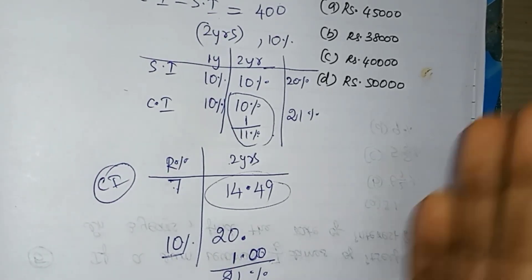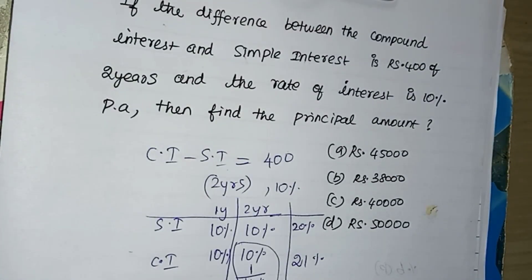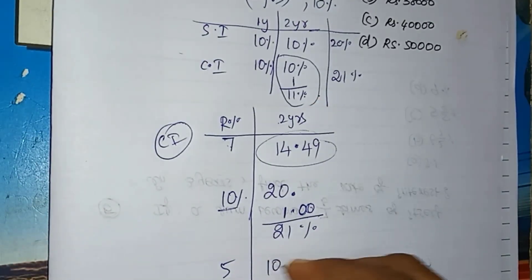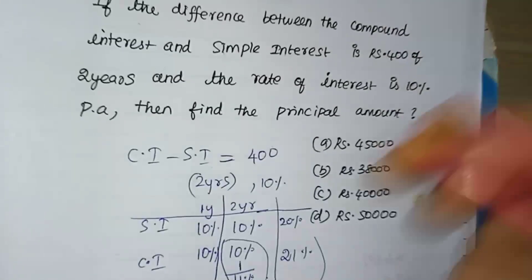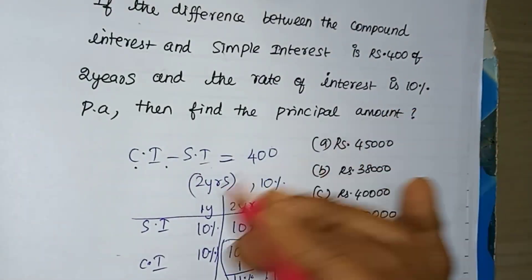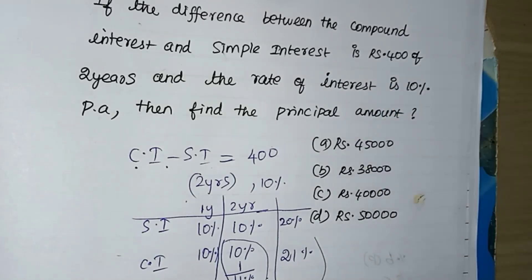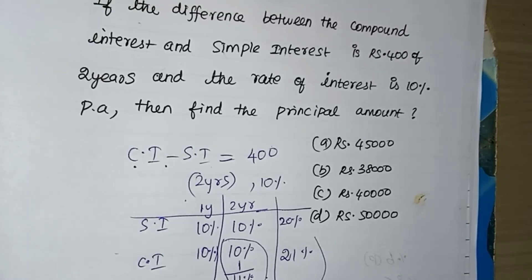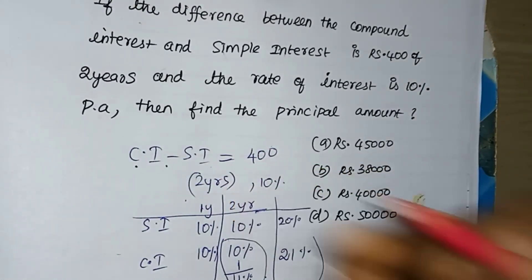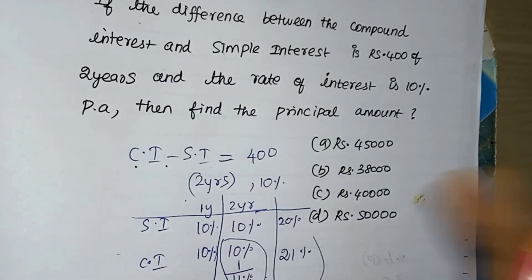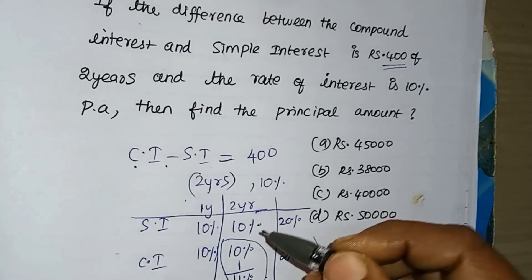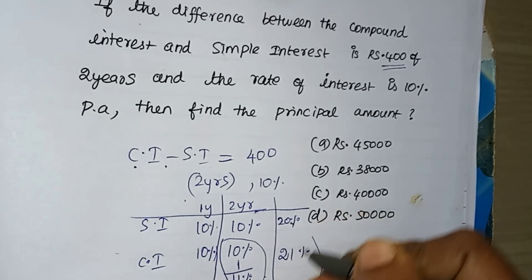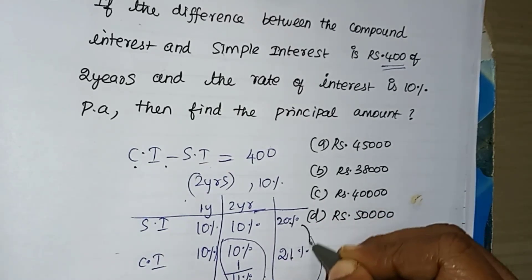You can find the compound interest with 5 and 10%. You can find the compound interest of 2 years and 20%. This means you can multiply compound interest by 5 and 20%. In simple interest we have 20%, and in compound interest we have 21%. The difference between them is 1%.